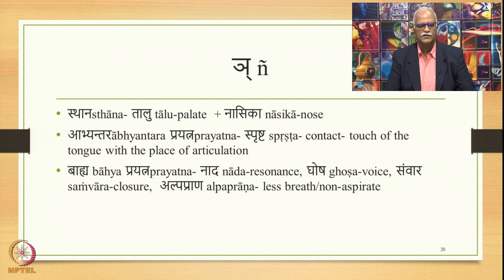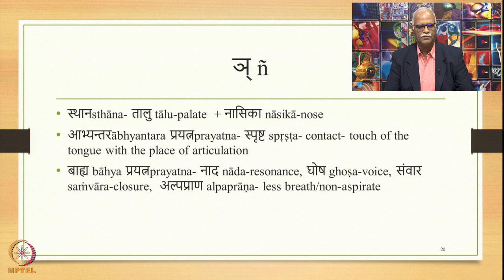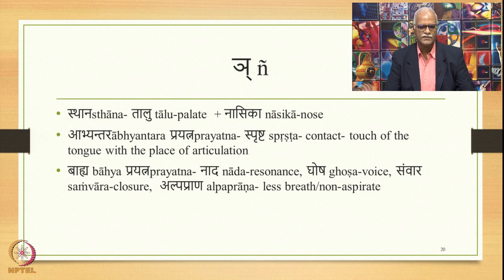Finally, in the cha class we have the sound ña — pronounced as ña. The place of articulation is talu plus nasika (the nose). The abhyantara prayatna is sprashta, and the bahya prayatna is nada, ghosha, and samvara — resonance, voice, and closure. This sound is also alpaprana, requiring less amount of breath than say jha. It is called non-aspirate.